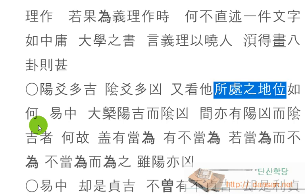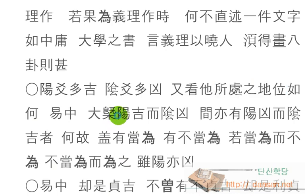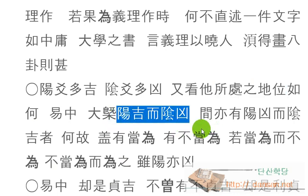역 중에 대개 양은 길하고 음은 흉하며, 대체는 그렇게 쓰여 있는데, 간역 유양흉이 음길자하니, 십중팔구는 양길음흉인데 그 간간에 양이 흉한 것도 있고 음이 길한 것도 있으니 무슨 까닭입니까? 개유당위하고 유부당위, 마땅히 해야 되는 것도 있고 마땅히 해서는 안 되는 것도 있어. 정리를 하나씩 하시면 돼요.